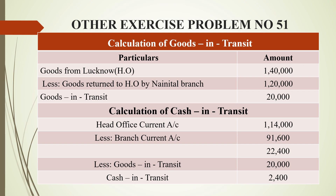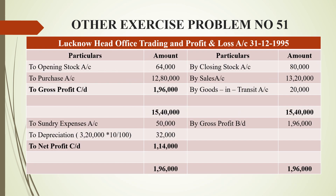Now for the head office trading account: on the debit side, opening stock is 64,000 and purchases are 12,80,000. On the credit side, closing stock is 80,000, sales are 13,20,000, and goods in transit is 20,000 rupees. Balancing this gives a gross profit on the debit side of 1,96,000 rupees.